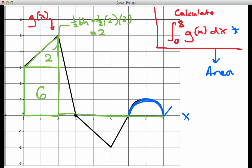In integral language, we would say that the definite integral from zero just to two of g of x dx would equal six plus two, or eight.